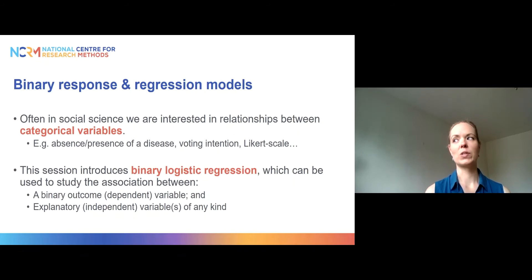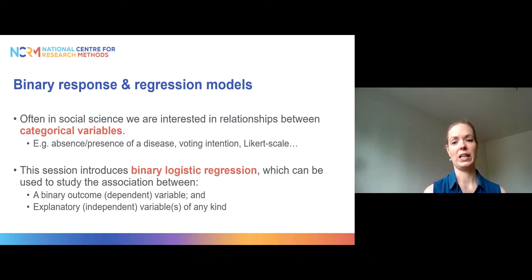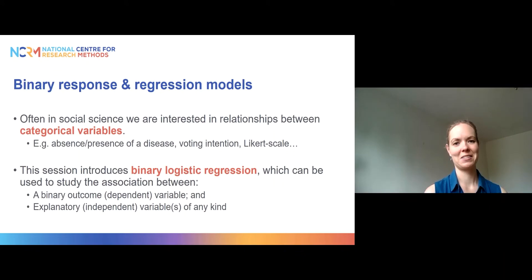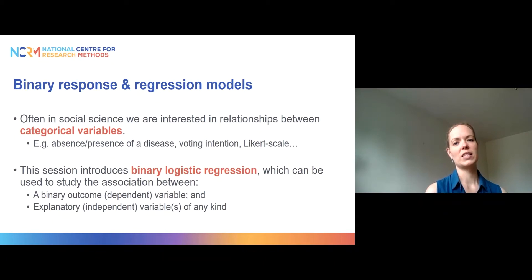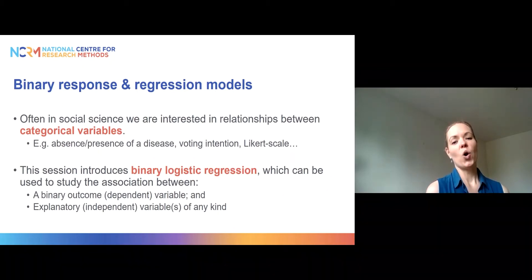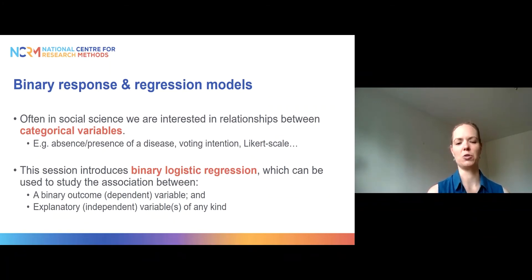So binary response and regression models — how does that work? Often in social sciences and other sciences, we are interested in relationships between categorical variables. We might want to study things like whether someone has a certain disease, such as whether someone has COVID or not, and what characteristics are associated with higher risk. It could be voting intention, or some other type of categorical variable like a likelihood scale that has been recoded into a binary variable.